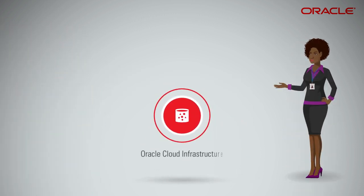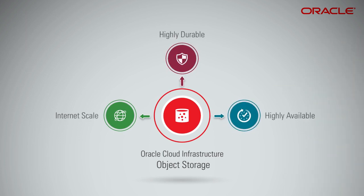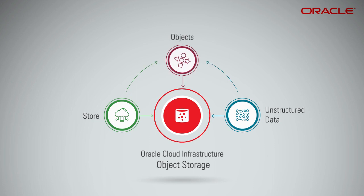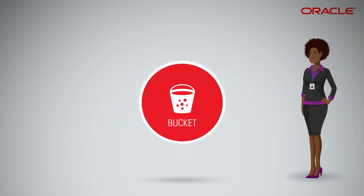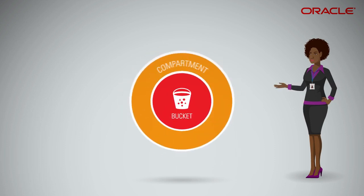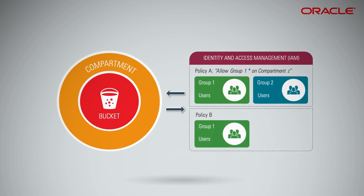Oracle Cloud Infrastructure Object Storage is an internet-scale, highly durable and highly available storage service. Unlike block or file storage, it is optimized for storing unstructured data. Data is stored as objects in buckets. A bucket is a logical container that groups objects together. A bucket is associated with a single compartment, which has policies that indicate what actions a user can perform on a bucket and all the objects in the bucket.